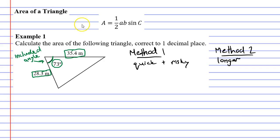So we'll start with the quick but risky method here and we'll start with our formula: area equals half a B sine capital C. And I want to remind you that the lower case letters A and B represents sides and capital letters C represents our angle.